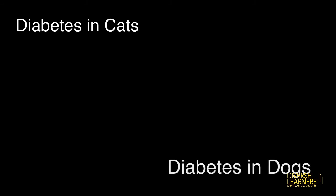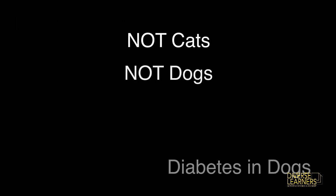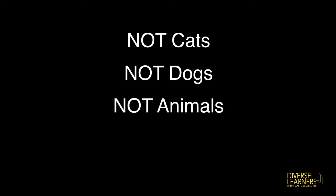But NOT is useful if you find you keep getting a lot of irrelevant search results. Say, for example, diabetes in cats and dogs. If you were focusing just on human studies, you could include NOT cats, NOT dogs, NOT animals, or maybe even NOT veterinary. Though we wouldn't want to use any of these if we were looking for literature about diabetes alert dogs — the dogs that alert their owners when they are approaching a life-threatening seizure. But used carefully, all of these Boolean operators can be used to refine your search.